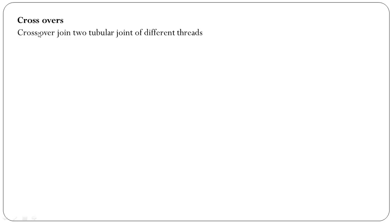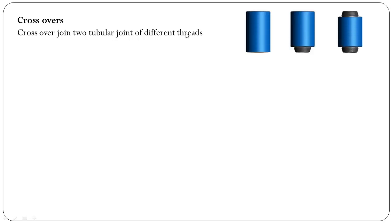Crossover joints are used to connect tubular joints of different thread types. The crossover can be a box-by-box connection, box-by-pin, or pin-by-pin connection.